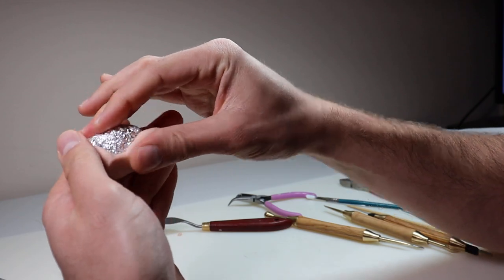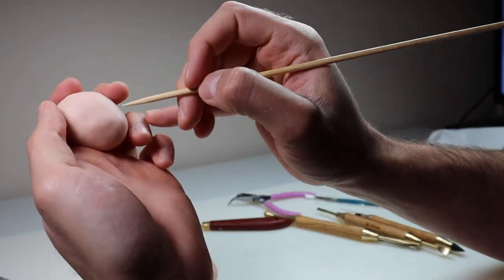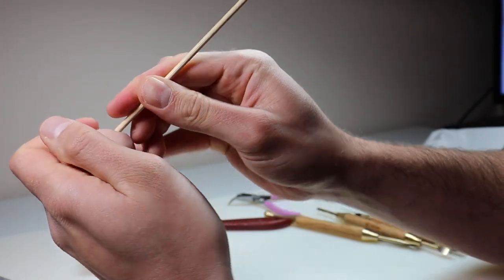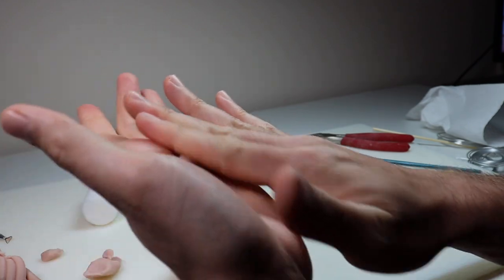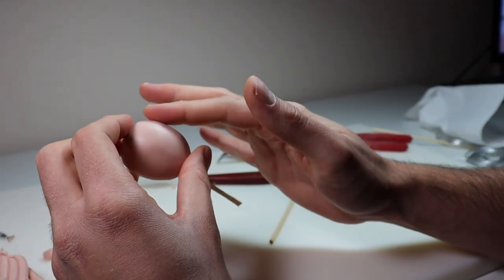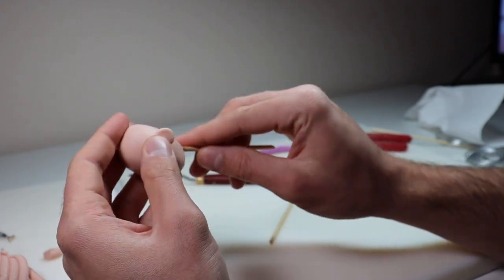All right, now that the body is done, I'm going to go ahead and start the head. All right, so first things first, I'm going to sculpt his ears because they're going to be sticking out from behind the mask. The mask is only going to cover the front of his head. You'll be able to see his hair behind it.